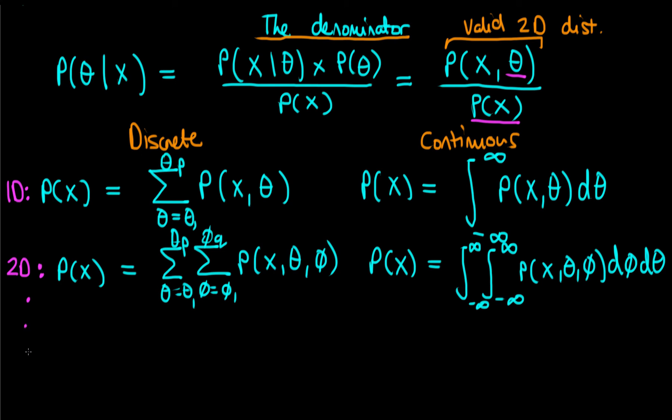Now let's consider the n-dimensional case. We've got n parameters in our joint distribution. How do we work out the discrete denominator? We have to do n summations. I'm not going to write the limits on these sums, but we're doing n summations where these are nested and we have P of x theta phi going on up to the nth parameter, which is epsilon here.